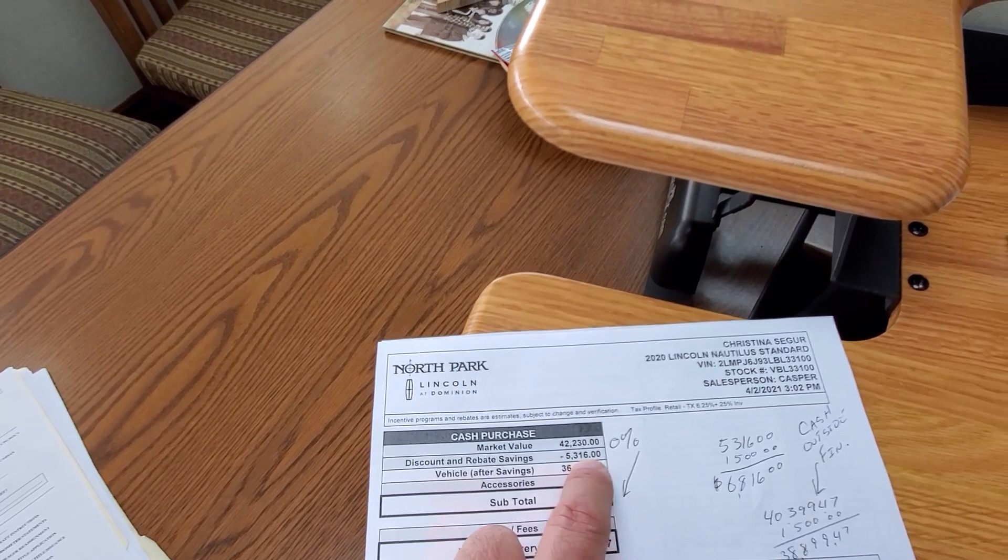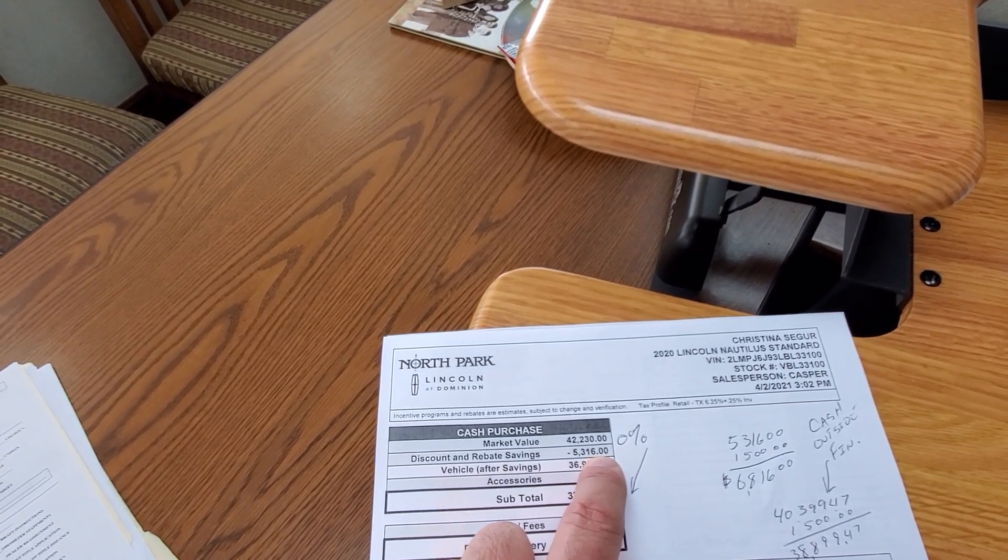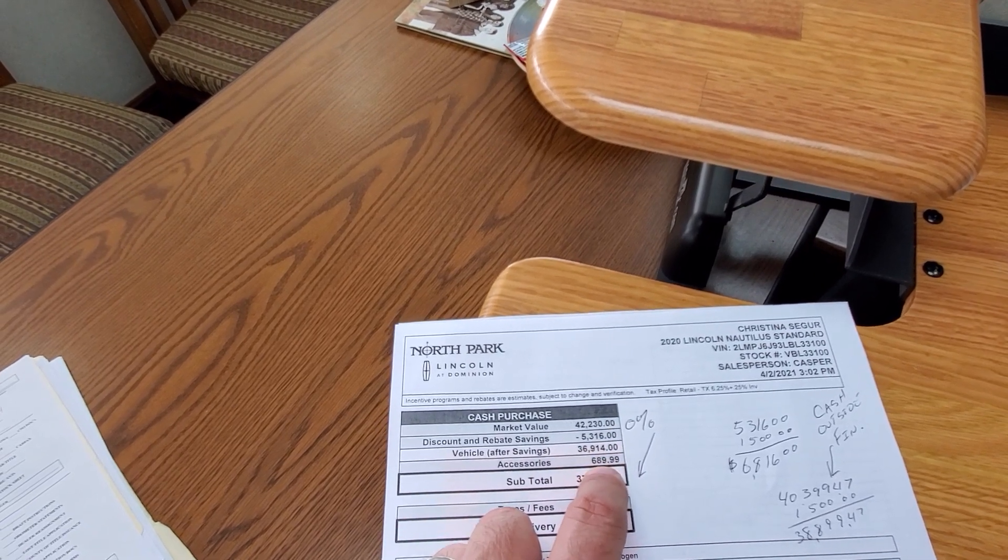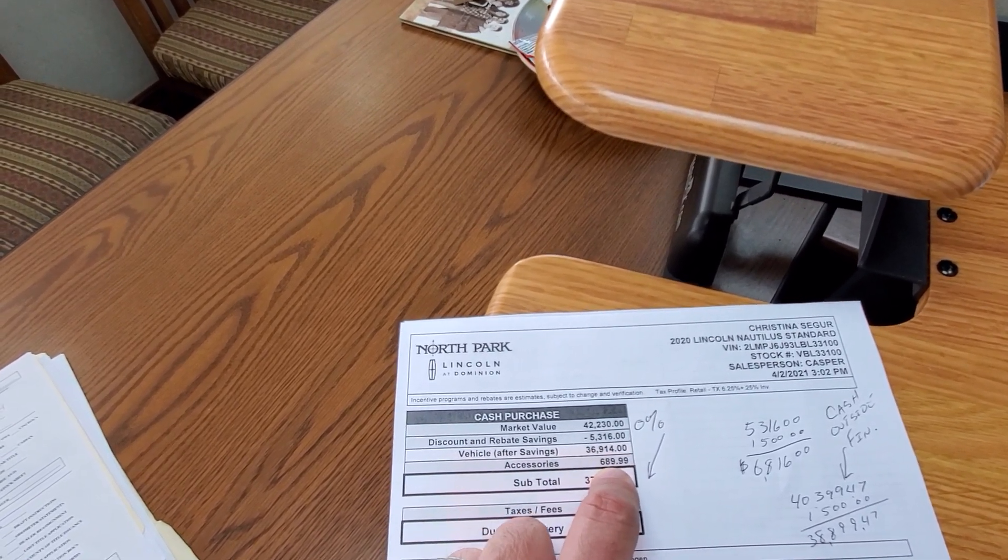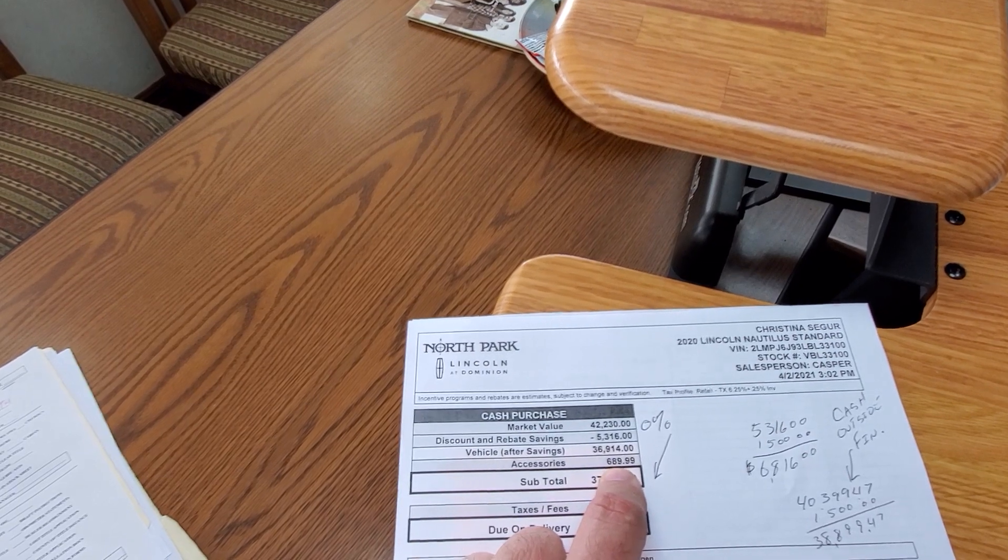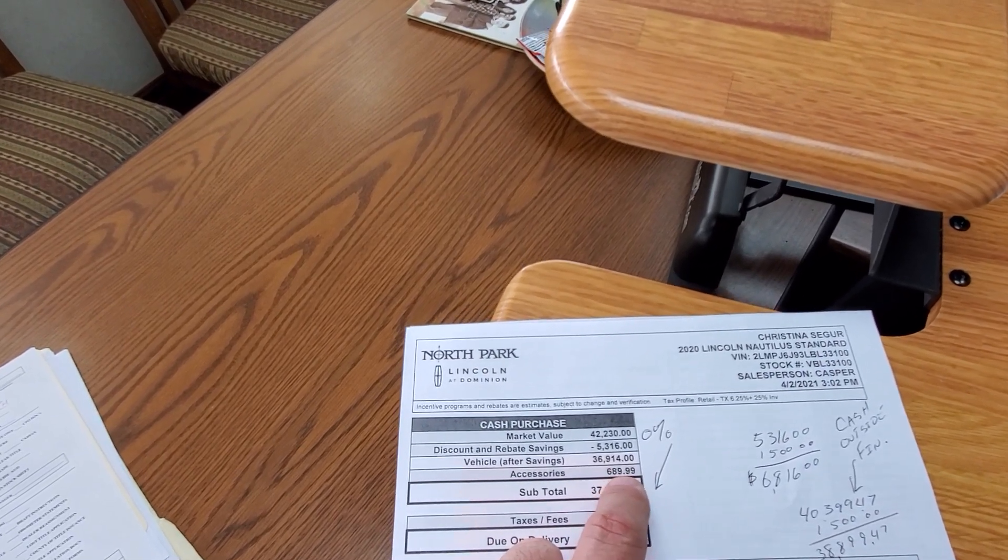It's got $5,316 in discounts and rebates. The accessories are tint, nitrogen, and dealer prep, which is diamond coat. I can explain that to you if you don't know what those are.